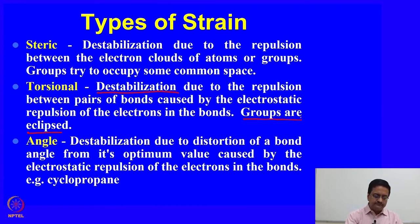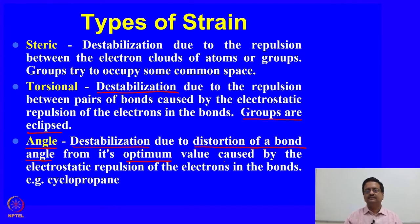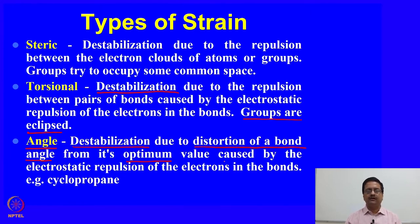The third type of strain is angle strain: destabilization due to distortion of a bond angle from its optimum value. For example, in cyclopropane or cyclobutane the carbon atoms are sp3 hybridized, so by default the bond angles at carbon should be 109 degrees, but in cyclopropane that angle is distorted from 109 degrees.